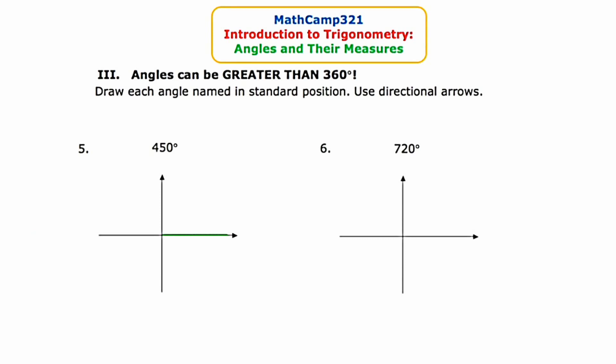For 450 degrees: 450 is exactly 90 beyond 360, so imagine doing a full circle and then adding another 90, which means facing straight up. I'll draw that terminal side facing straight up. Without a directional arrow this looks like just 90 degrees, so I need a directional arrow that does a full sweep around the circle and then continues another 90. Since the angle is positive, I go counterclockwise — it will look a little like a snail. Starting at the initial side, do a full sweep around and then one extra 90. This angle is 450 degrees.